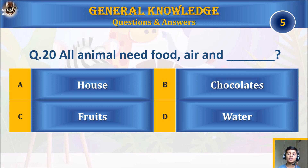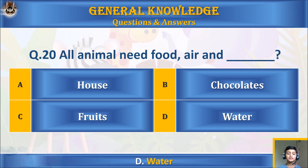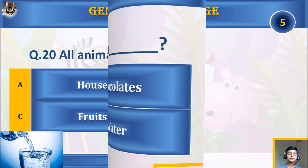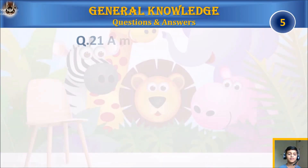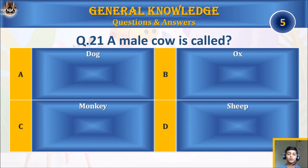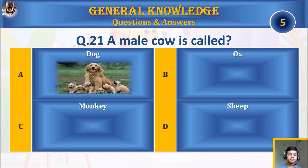Question twenty: all animals need food, air, and: A) a house, B) chocolates, C) fruits, or D) water? Your time starts. The answer is D) water.